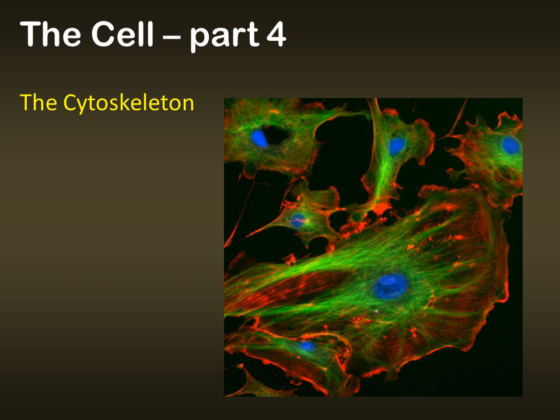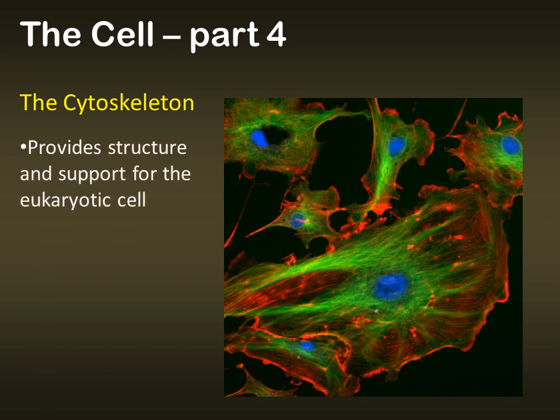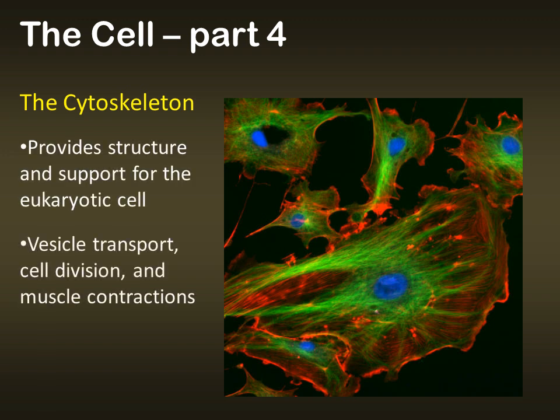The cytoskeleton is another group of organelles found only in eukaryotic organisms. They provide structure and support for the cell. They are also functional in terms of transporting vesicles, helping to divide the cell, and they're important for muscle contractions.